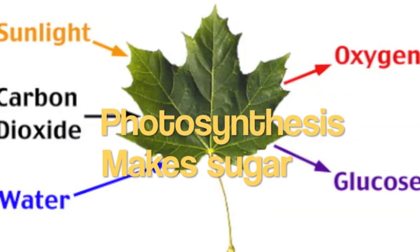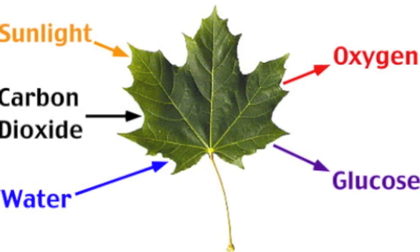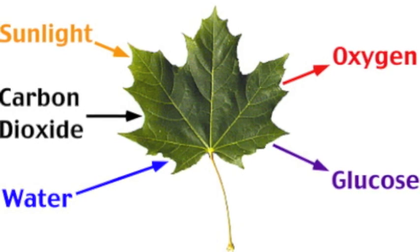During photosynthesis, plants use energy from the sun. They take in carbon dioxide and water and they make glucose and oxygen.